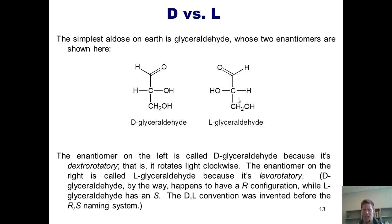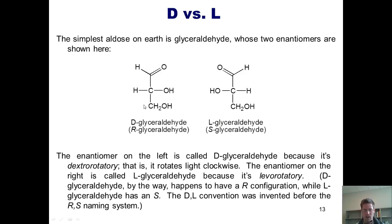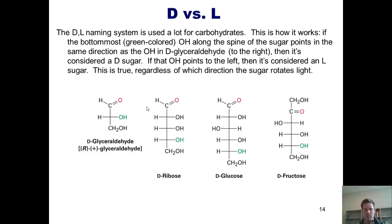You might remember us talking about this light rotation concept called chirality back in Chapter 5 last semester. I want to reiterate that there is no direct correlation between something being R or S and it being dextrorotatory or levorotatory. Some R compounds happen to be dextrorotatory; others happen to be levorotatory. The only thing we can say for sure is that if one enantiomer is dextrorotatory, then the other will be levorotatory, and vice versa. D-glyceraldehyde happens to have an R configuration, and L-glyceraldehyde happens to have an S configuration. While we don't use D/L convention very frequently for other organic compounds, we use it a ton for carbohydrates.